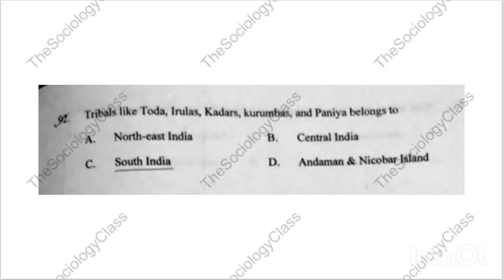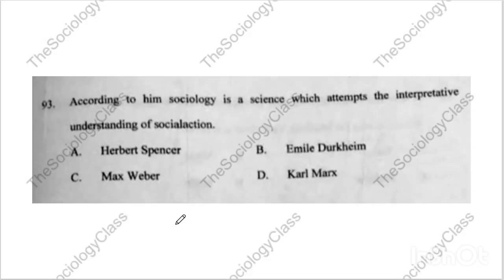Question number ninety-two: 'Tribals like Toda, Irulas, Kadars, Kurumbas, and Paniya belong to?' The correct answer is C — South India. The PDF on tribes available on the Telegram channel and the tribe video mention all the locations of tribes. Please study that part carefully — all such questions will be solved from there.